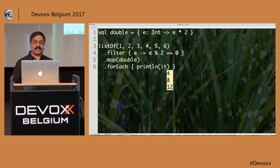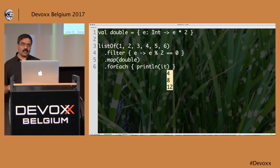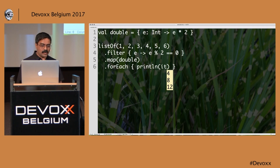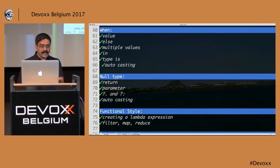Kotlin also has destructuring of lambda parameters. So if you're receiving multiple parameters, you can easily destructure them into different values much more easily.